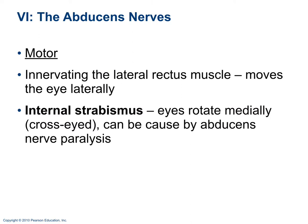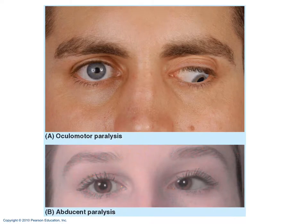Cranial nerve 6 is the abducens nerve — motor. It innervates the lateral rectus muscle, which moves the eyes laterally. Paralysis causes the eyes to deviate inward, resulting in internal strabismus, or cross eyes.